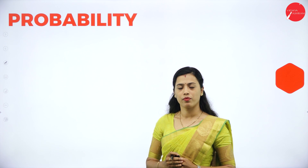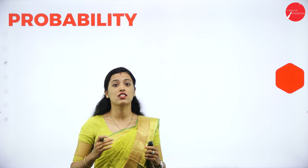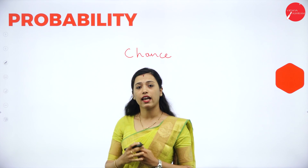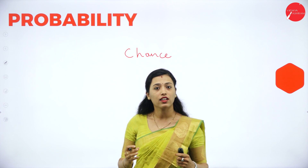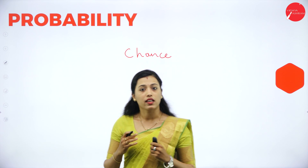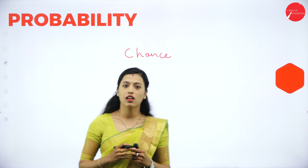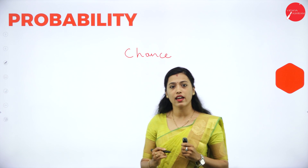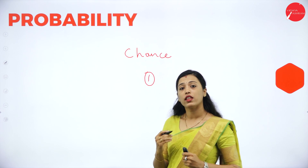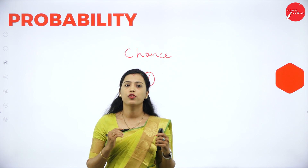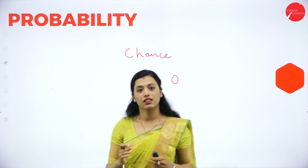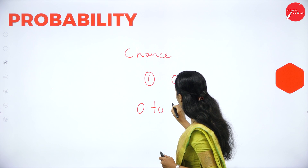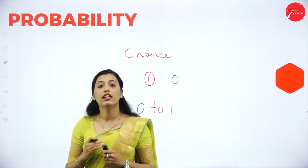What do you mean by probability? In ordinary language, probability means a chance. Probability can be expressed either in the form of fraction, decimal or percentage. When the happening of an event is predicted to be certain, the value of the probability is denoted by 1. And when the happening of the event is impossible, the value of the probability is denoted by 0. Thus the value of the probability ranges from 0 to 1, and probability will never be negative.